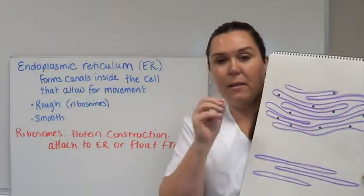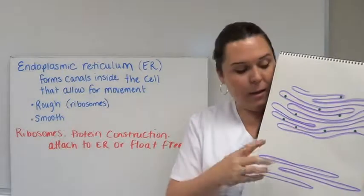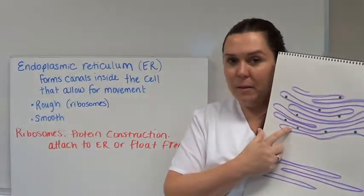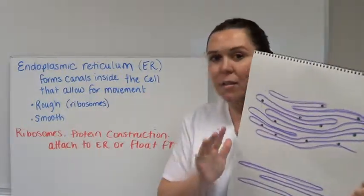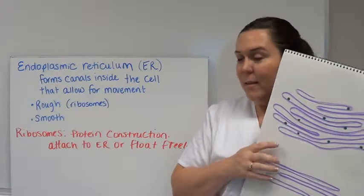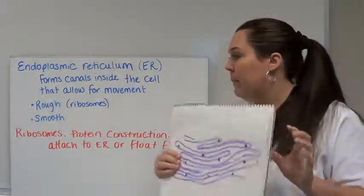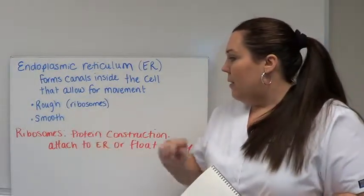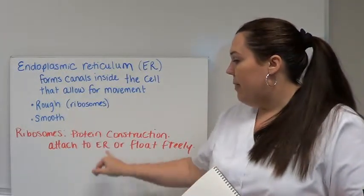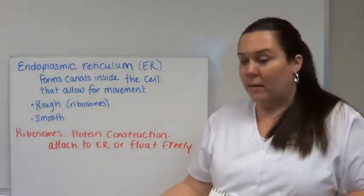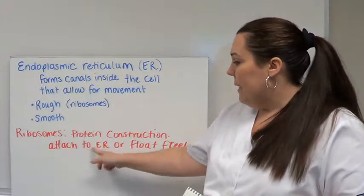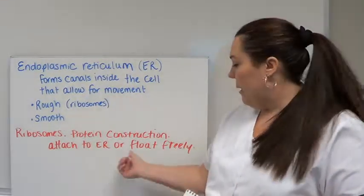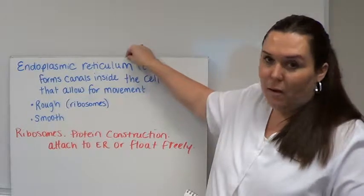Ribosomes can either flow freely through the cell or they attach to the endoplasmic reticulum. That's all you need to know about that organelle for this chapter. Ribosomes are for protein construction. That's where protein is built up within the cell. They can attach to the endoplasmic reticulum or float freely.